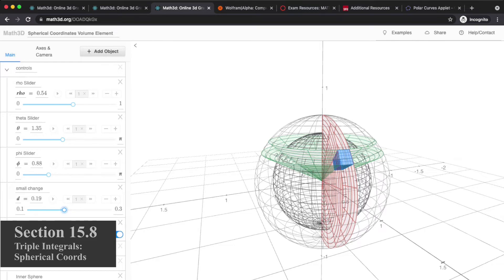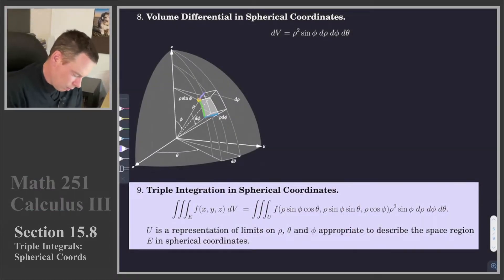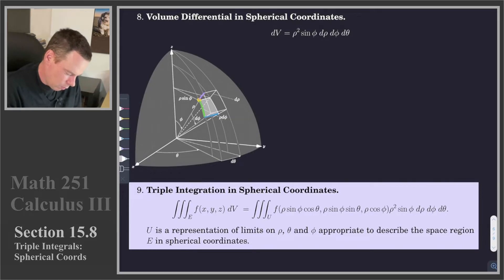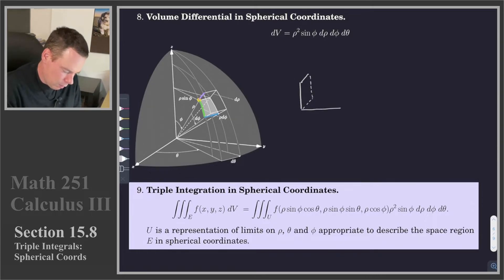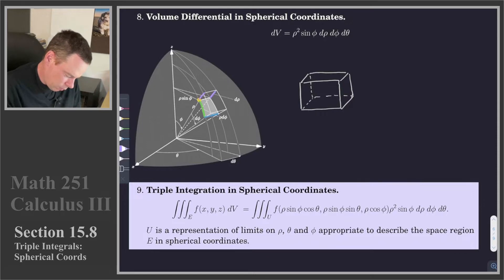Now let's actually compute what the volume of this small volume element is. I'm going to extract from this diagram that volume — the blue volume in our picture. We've got this box that's got a bit of curved sides, but I'm going to draw it as a box because we're imagining it's so tiny that we approximate it with a rectangular box to get a feel for what the size is. So we've got this rho thickness — these purple lines represent our rho direction. That's our dρ.